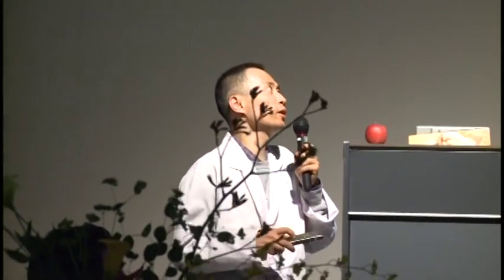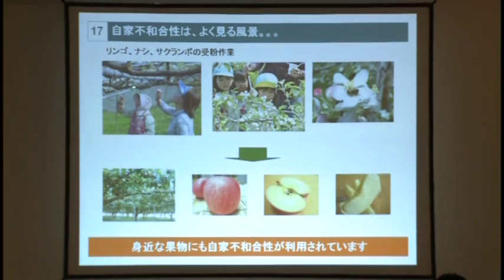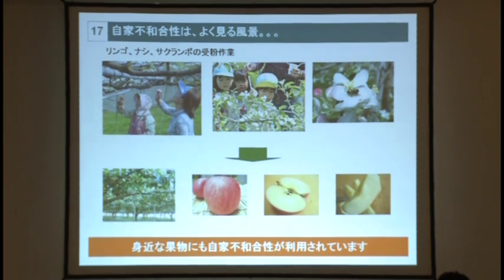自家不和合成は、そういうふうに皆さんの身の回りでよく見ます。昔はこうやって、耳かきのでっかいみたいなやつで花粉をポチョポチョつけていたわけですが、これはもちろん違う花粉をかけているわけです。もちろん蜂さんが運んでくれることもあります。そういうふうに、梨の木に行くと、ナシが下がっているわけですけれども、これももちろん違う花粉をかけるわけです。ここからが問題です。